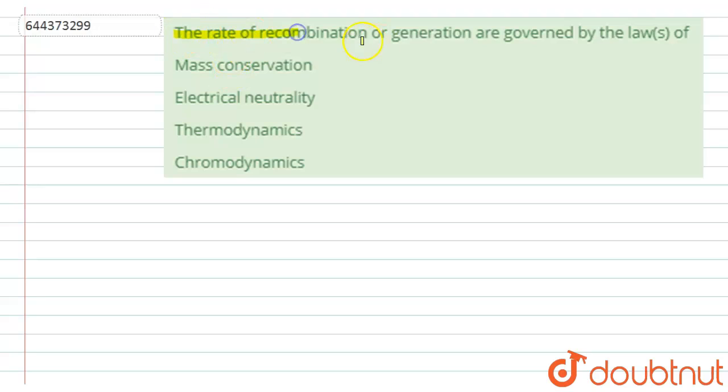The rate of recombination or generation are governed by laws of... So for this, let's look at the solution. So actually in this question we have to state, out of these four, which one of the law is governed for the rate of recombination and generation.